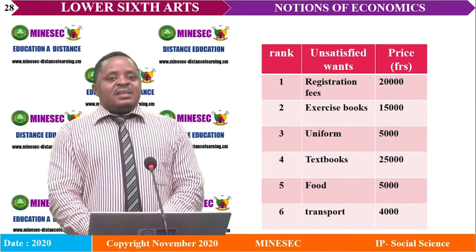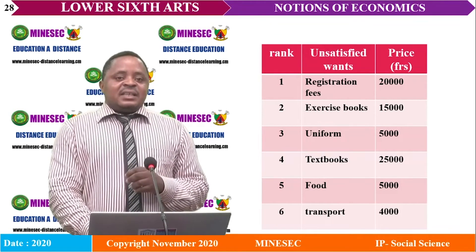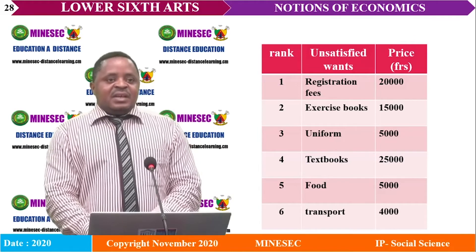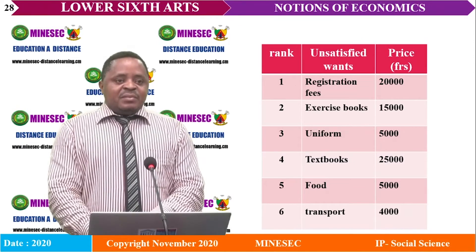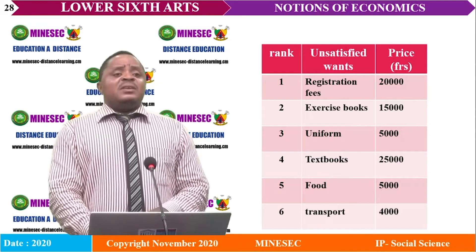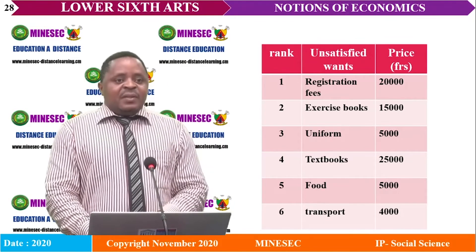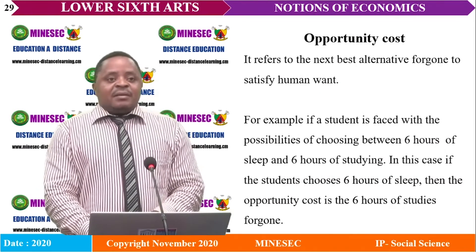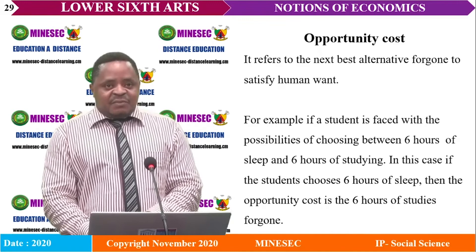The ranking gives the student a scale of preference because the student has started with the most pressing ones. Looking at the table, the first item is registration fees at 20,000, then exercise book, uniform, textbook, food, and transport. The student will buy what the budget can afford.